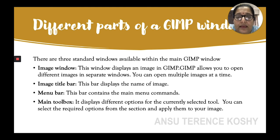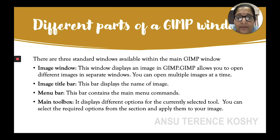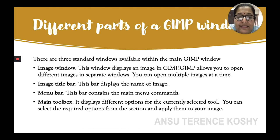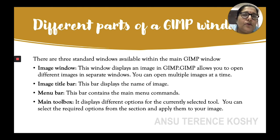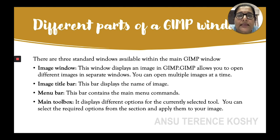The Image Title Bar displays the name of the image. The Menu Bar contains the main menu commands — whatever operations you need to do are found here. The Main Toolbox displays different options for the currently selected tool. You can select the required option and apply it to your image — for example, to cut an image you use the crop tool or scissors, and to change color you select from the toolbox and apply it with brush strokes.